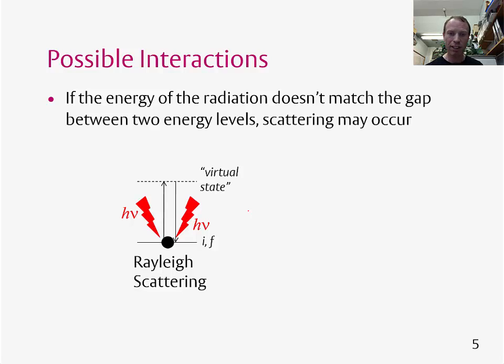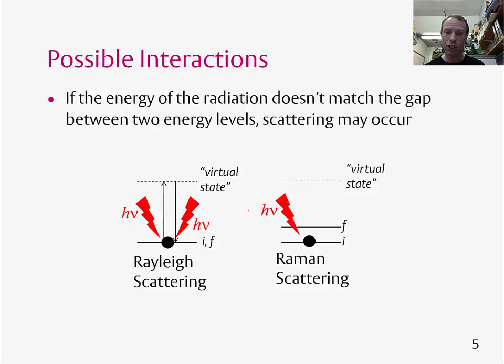Then there is Raman scattering, in which the molecule absorbs light, is excited to a virtual state, falls back down, but falls back down to a different final state. Because it's a different final state, the light that is emitted is of a different wavelength or different frequency to the light that was absorbed. Raman scattering is the basis of Raman spectroscopy, which we'll talk about later in the course.